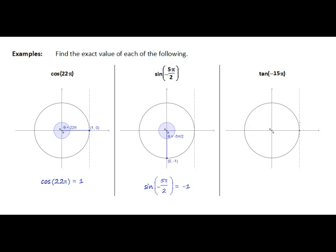Continuing on to negative 4 pi. And again we can note that the negative but even multiples of pi occur at the positive x axis, and the negative but odd multiples of pi occur at the negative x axis. So that means that negative 15 pi is going to occur around here at the negative x axis. And we're dealing with tangent here.